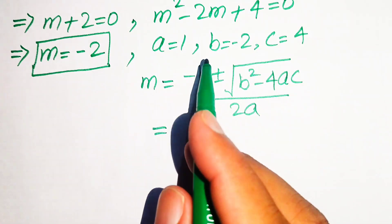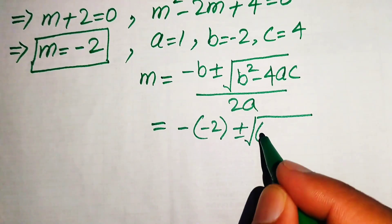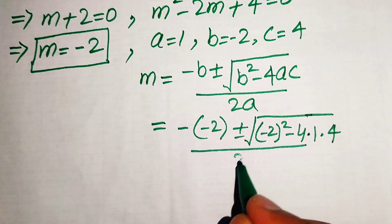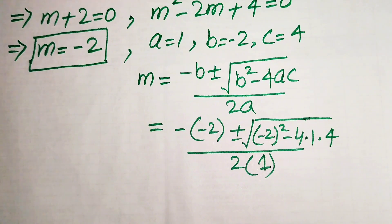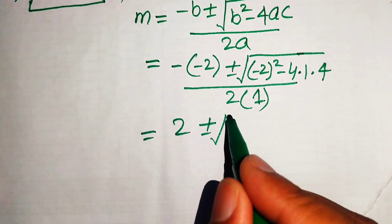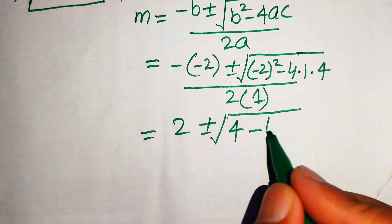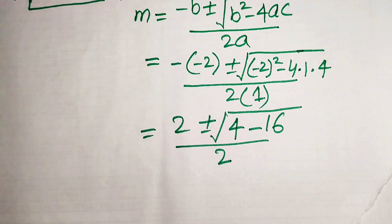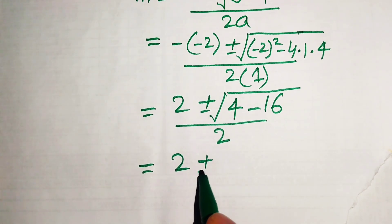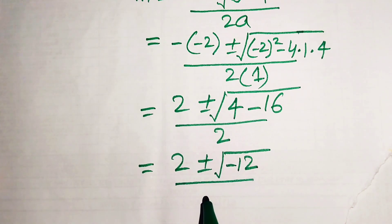We substitute the values of a, b, and c. With b equals minus 2, we get negative times minus 2, plus or minus the square root of (minus 2) squared minus 4 times 1 times 4, divided by 2 times 1. Simplifying: minus times minus gives plus 2, and (minus 2) squared equals 4, so we get 4 minus 16 equals minus 12 in the discriminant, divided by 2.